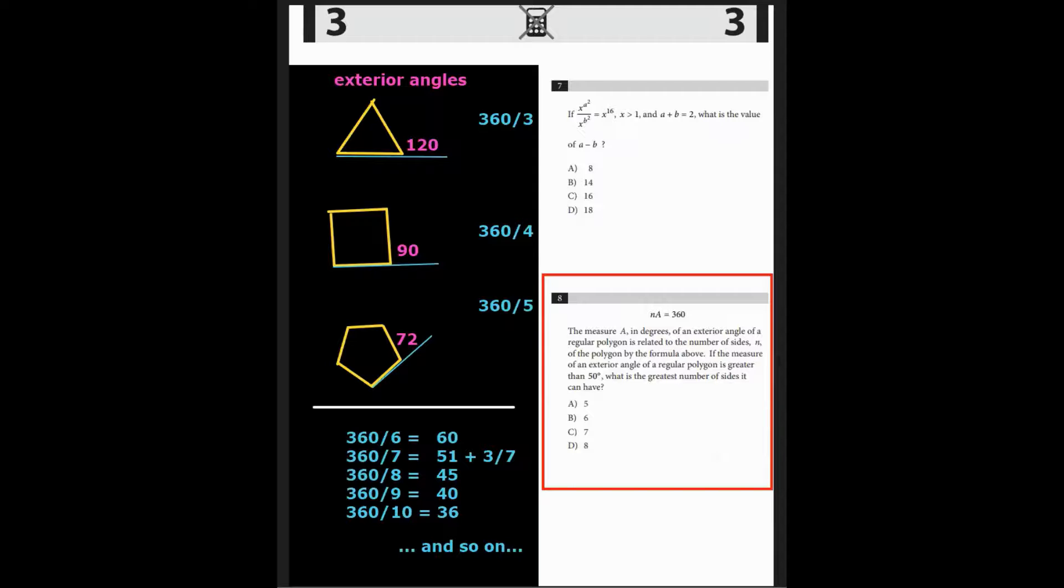360 divided by five would give an angle of 72 degrees exterior to that shape. We can continue with this list. What if we had a six sided polygon? Then the exterior angle would be 360 divided by six or 60. And 360 divided by seven for a seven sided figure. 360 divided by eight, nine, 10, and so on. These give us the values there on that mini chart on the bottom.